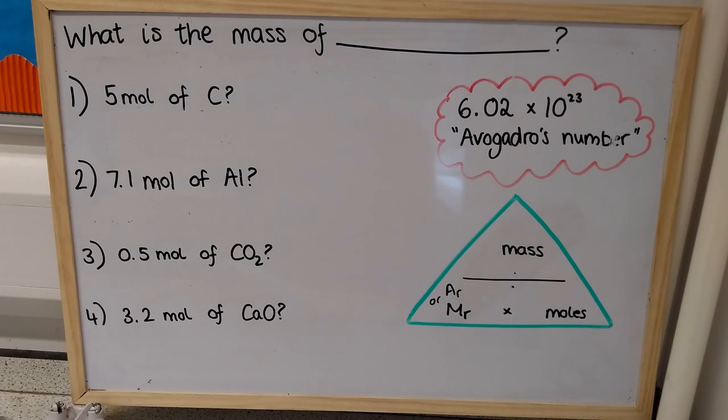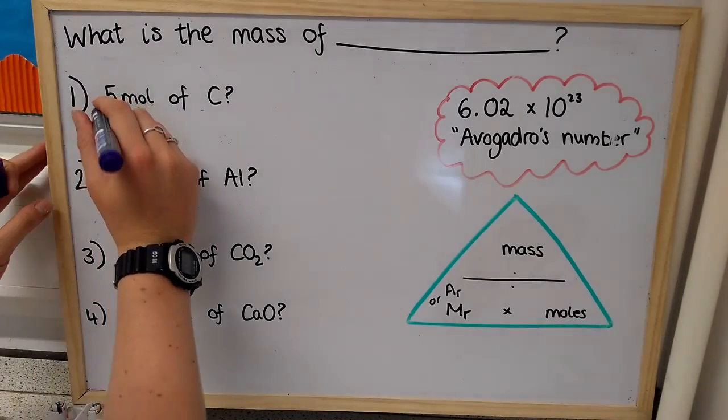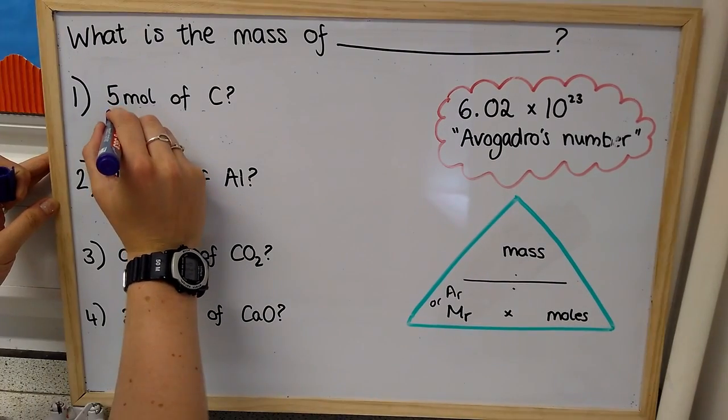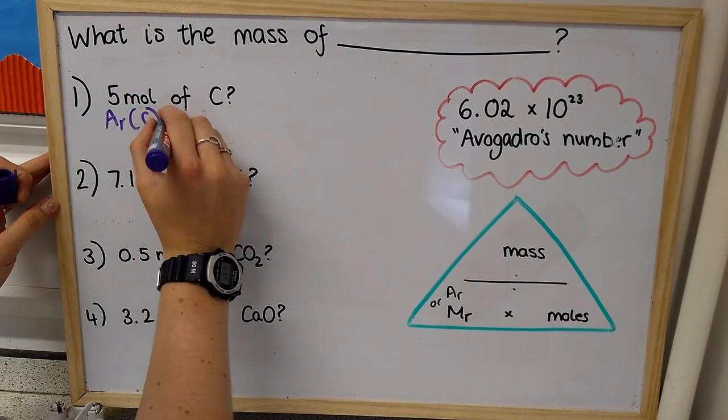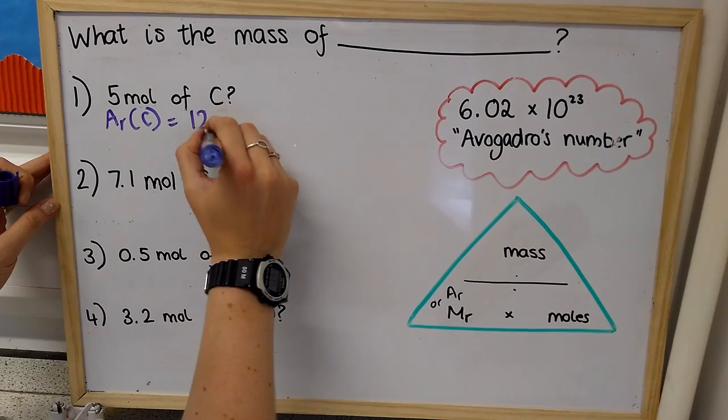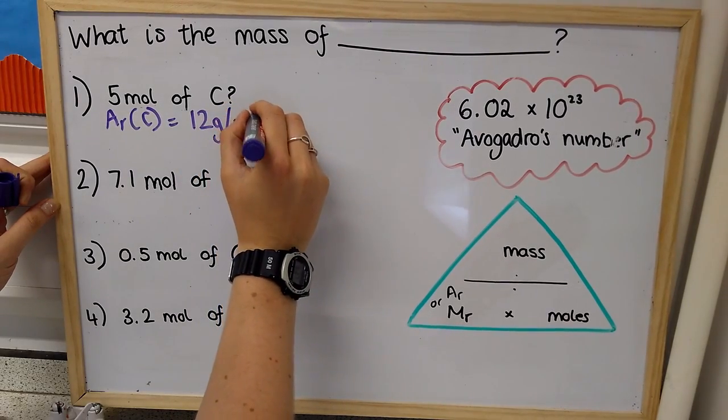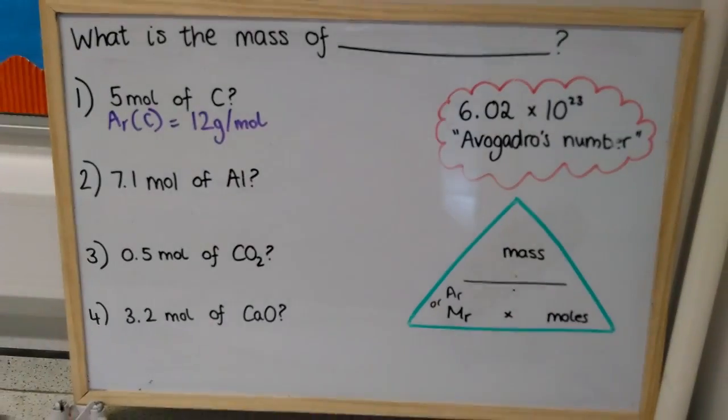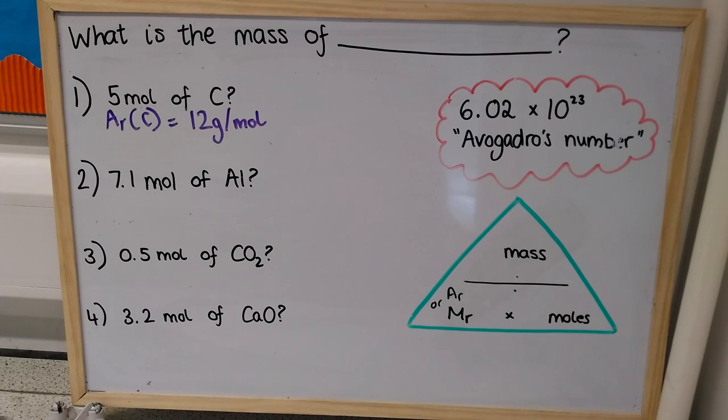So, I've already said that the relative atomic mass of carbon is 12. And you'll see that this time I've actually put some units on that, so 12 grams per mole. Every mole of carbon weighs 12 grams.